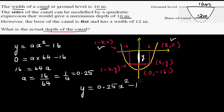Now the question is, you want to find this y, which is the actual height of the canal, when x is 6 or negative 6. So the question is basically, what is y when x is 6 or negative 6.